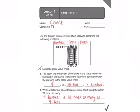So here is your exit ticket for lesson one for mission one. Make sure you have the labels in the top: ones, tens, hundreds, because it does say for number one label the place value chart.